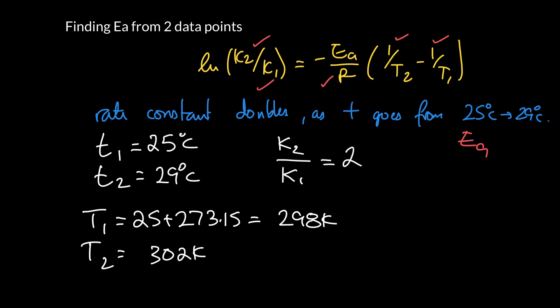So we can rearrange that equation and plug in. We want the activation energy, so it is equal to minus R times the log of K2 over K1, all divided by 1 over T2 minus 1 over T1.